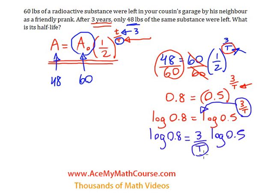Since we want to isolate this, I'll multiply both sides of the equation by big T. So I have T over here, T over there, thereby canceling out the T over here. Now it's gone, so I have T times the log of 0.8 equals 3 log 0.5.